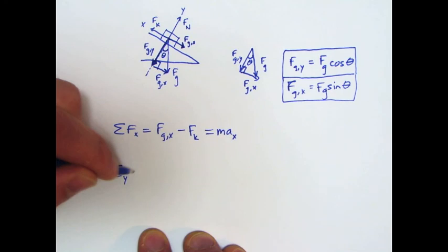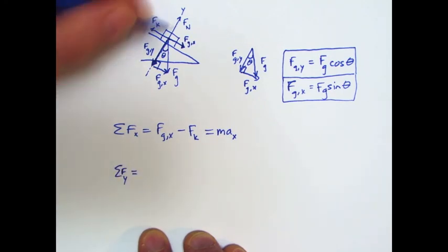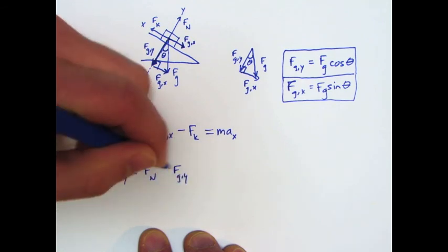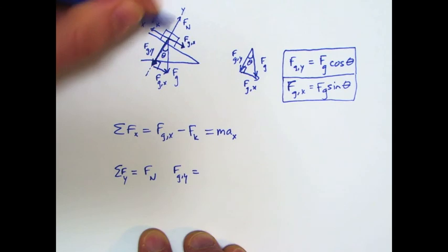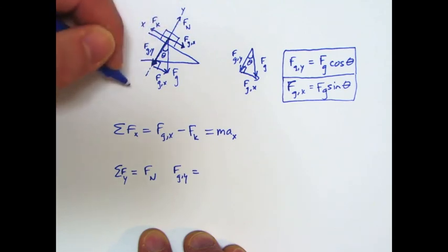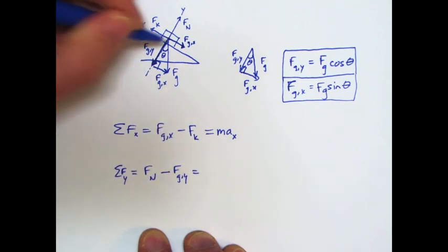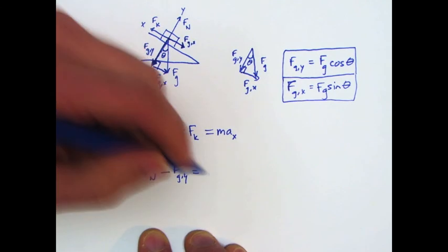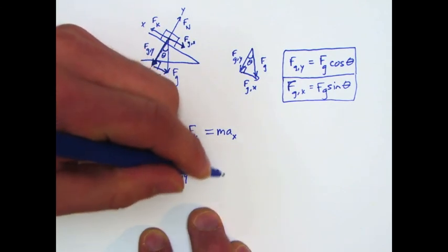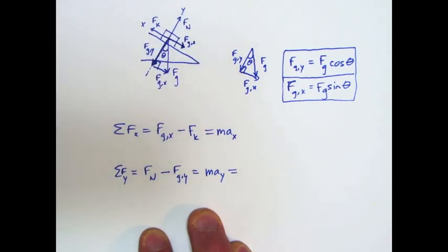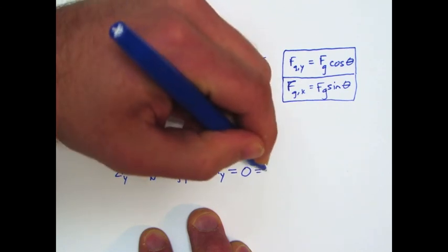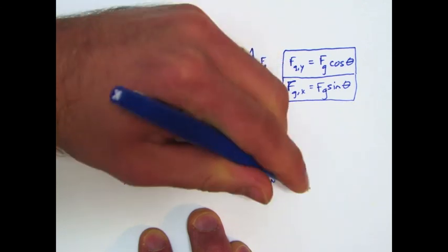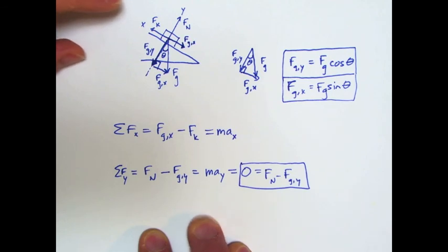Now in the Y direction, we have the normal force and we have the Y component of weight. And because they are in opposite directions and F, the normal force, is more up than the Y component, I'm going to subtract the Y component. And now I do know what the acceleration is. That box is not popping off the surface. It's not sinking into the surface. So there is no acceleration in the Y direction. So I could say MAY, but Y is 0. And so, therefore, the whole thing equals 0. So this is the sum of the forces in the Y direction. And that's where we'll stop.